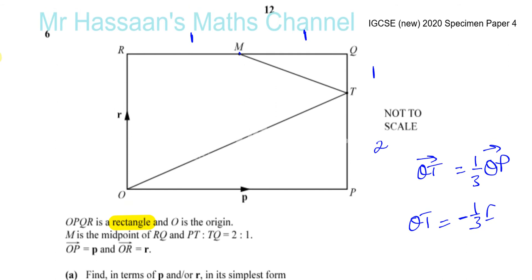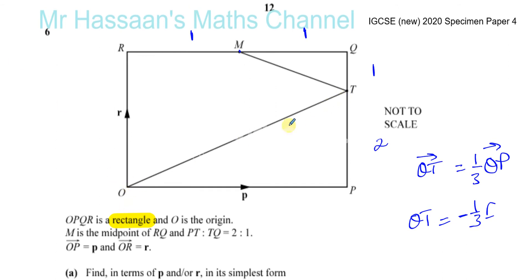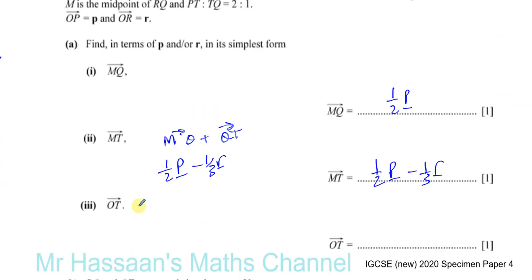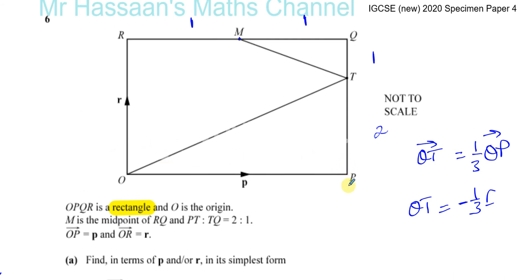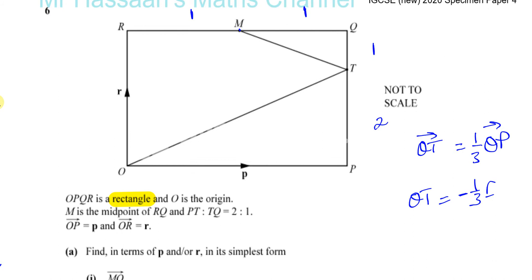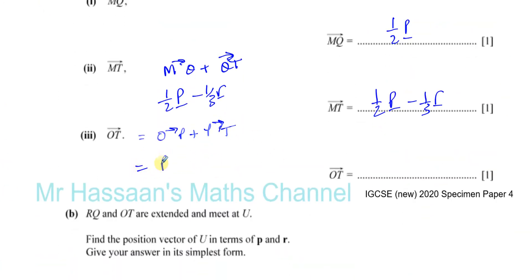Now find the vector OT. From O to T, we go from O to P and then from P to T. So OT = OP + PT. We know OP = p. PT is in the same direction as vector r, and it's two-thirds of the length of r, because PT is two parts out of three. So OT = p + ⅔r.